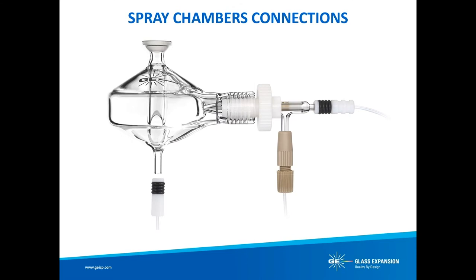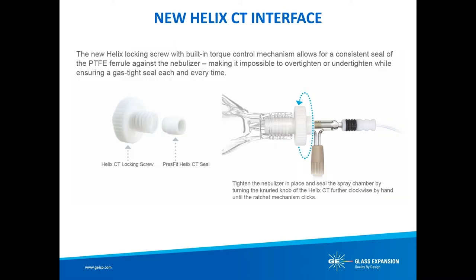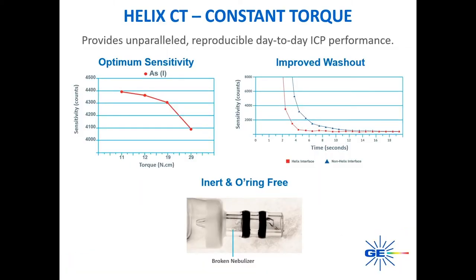Now let's look at a few spray chamber connections. While several features of Glass Expansion spray chambers were discussed in the Spray Chambers 101 webinar, two are relevant today: the Unifit drain connector and the Helix CT. Glass Expansion's Helix CT locking screw with built-in torque control mechanism was released in 2018. This unique nebulizer interface allows for a consistent seal of the PTFE ferrule against the nebulizer, making it impossible to over-tighten or under-tighten while ensuring a gas-tight seal every time. ICP sensitivity is affected by nebulizer depth within the spray chamber and the torque applied to the nebulizer seal. The combination of torque control and positive stop — which fixes penetration depth — allows the ICP analyst to achieve the same nebulizer performance every day.